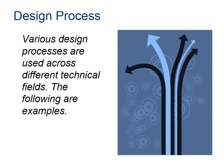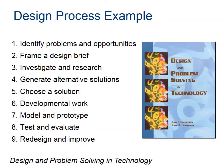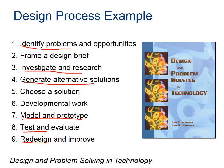There's more than one design process and they share a lot in common. Here's the textbook Design and Problem Solving in Technology — it has nine different steps. First, you identify a problem. You investigate and do some research. You generate alternative solutions, model and prototype, and you test. And then, of course, you can redesign and improve.